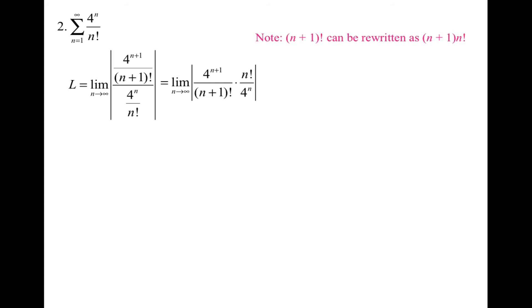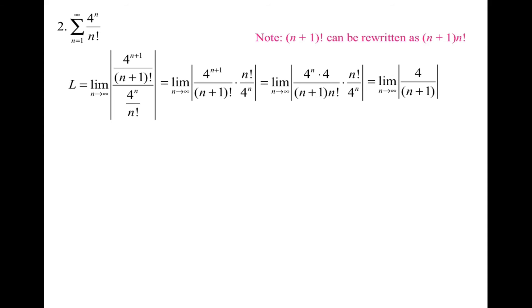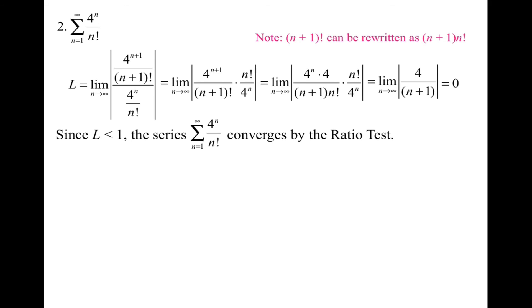Now let's try the example with a factorial. I rewrite it with the n+1 term over the nth term. To simplify, I change it into multiplication. Notice that (n+1)! can be rewritten as (n+1) times n!, so I rewrite it that way so that the n! terms cancel, and so do the 4 to the nth powers. I'm now left with something much nicer: 4 over (n+1). When I plug in infinity, I get a constant over infinity, which gives 0. Since the limit is less than 1, the series converges by the ratio test.